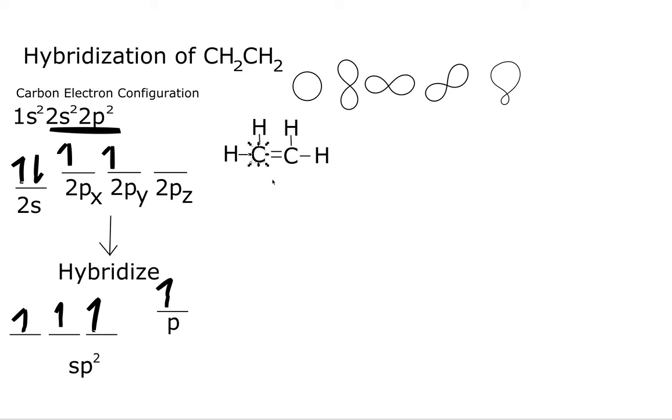We're going to start with this carbon right here. So we have sp2 hybridization in both of our carbons. This is an s orbital. This is a p orbital. This is a p orbital. This is a p orbital. And this is our sp orbital, our sp2 orbital. And we have 3 of them.